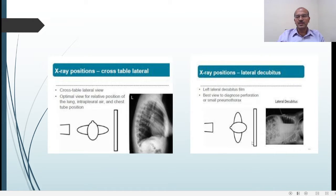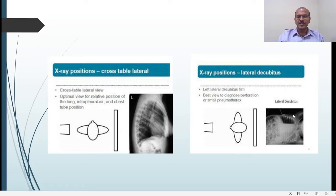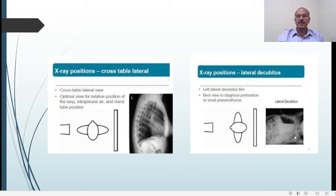The shooting is from the front, so it's like an AP view but the patient is on the side. So this is a lateral decubitus view. In the cross-table lateral you get the lateral view, while in lateral decubitus you get something similar to an AP but the position is altered.